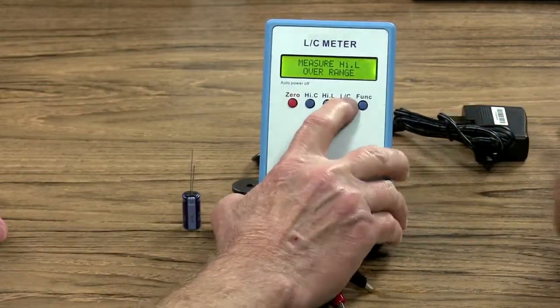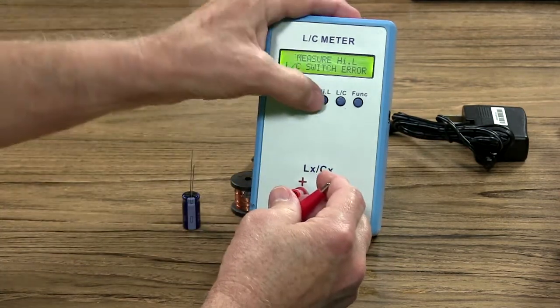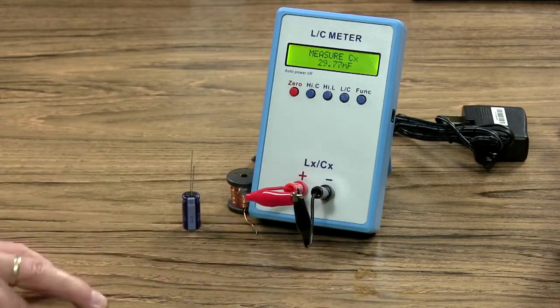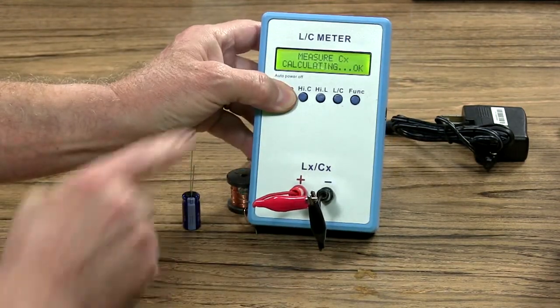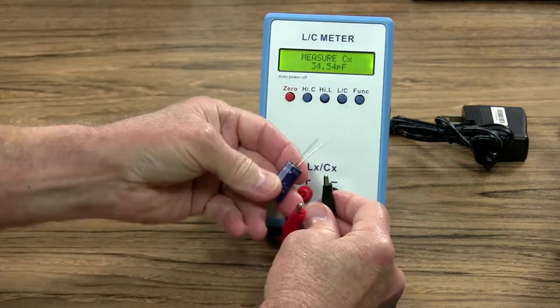Let's just check something here with it. We'll put it on capacitance first. We'll zero our meter here. We'll short the leads together. Hold the zero button. It's calculating. It says okay. Alright, so let's check a capacitor.